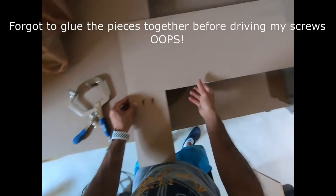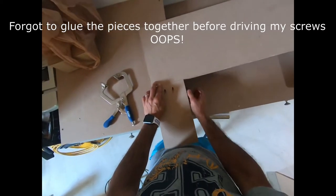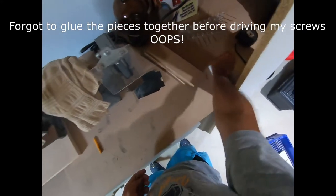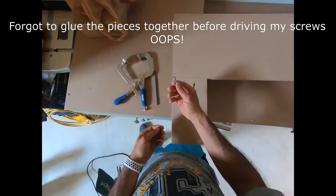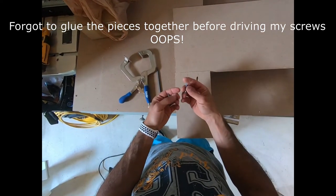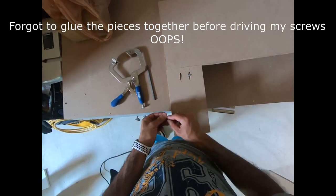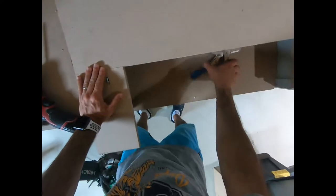You can look at a chart on what size screws to use for what size thickness you have. This is three-quarter stuff, and it is recommended to use a one and a quarter inch screw just like this one. All I'm doing is driving these bad boys right here to tighten this up. This clamp is also pretty handy when it comes to this.